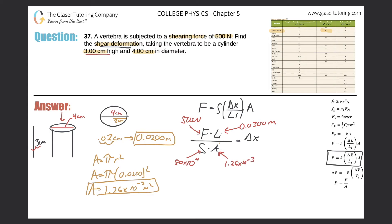And guess what, guys? All I need to do is now plug it all in. So let me just rewrite it nicely. So we have 500 newtons times the initial length of 0.03 meters, divided then by the Young's modulus of 80 times 10 to the ninth, and then times 1.26 times 10 to the minus 3. And that equals now the shear deformation or the change in x.